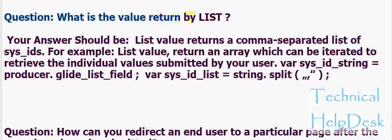What is the value returned by list? List value returns a comma-separated list of sys_id's. For example, list value returns an array which can be iterated to retrieve the individual values submitted by the user: var sys_id_string = producer.glide_list_field; var sys_id_list = string.split(',').